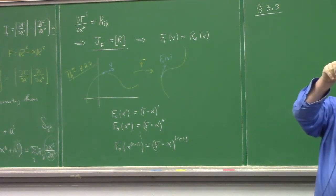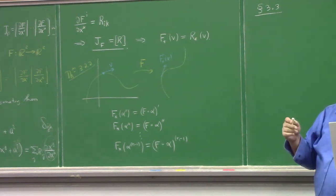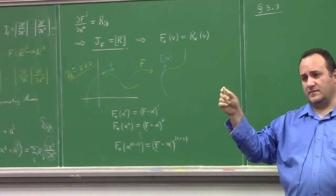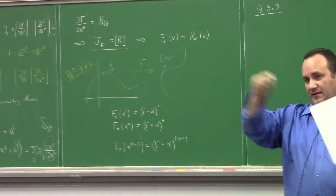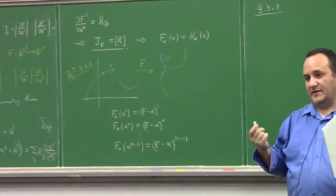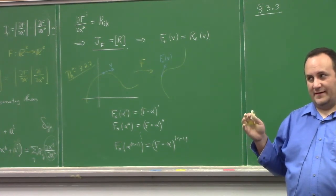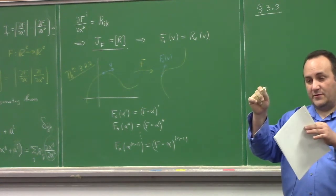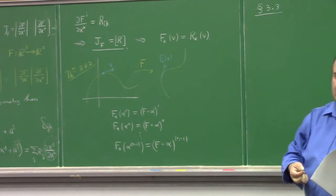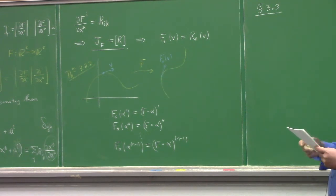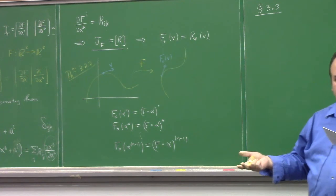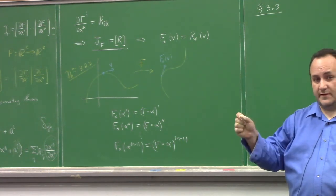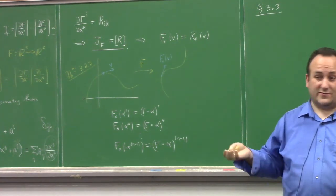If you take a point in the set and you can move that point to any other point in the set by some group element, then that group action is said to be transitive. Translations are a transitive group action because if you give me any one point, I can move it anywhere else. In contrast, the orthogonal group is not transitive on all of R^3, because I'm stuck on spheres — I can only move a point with an orthogonal transformation while staying at the same distance from the origin.